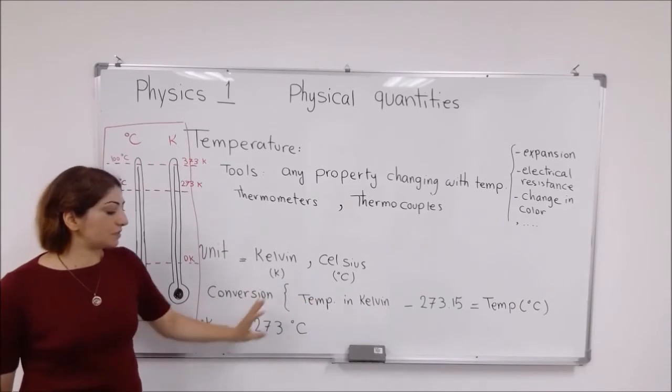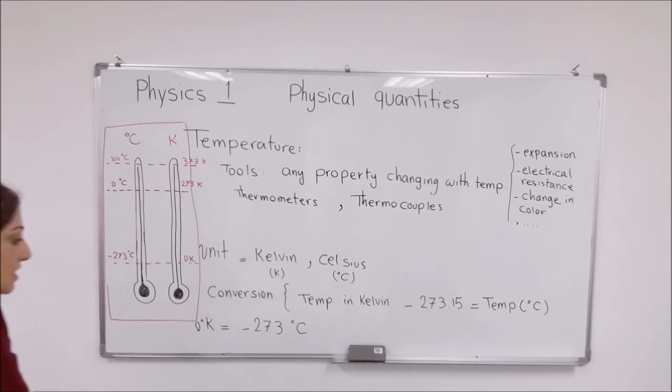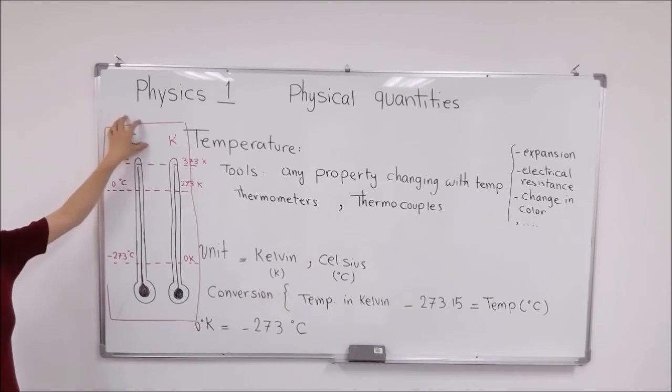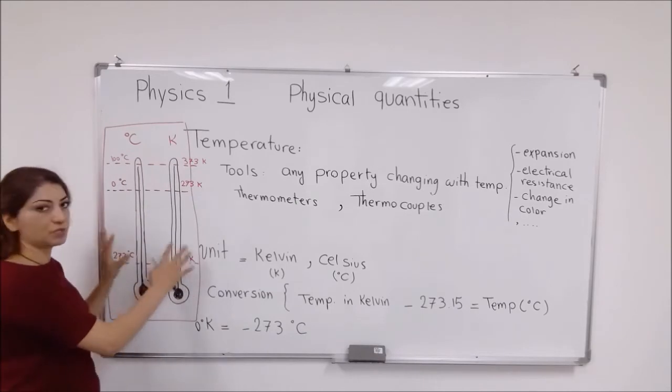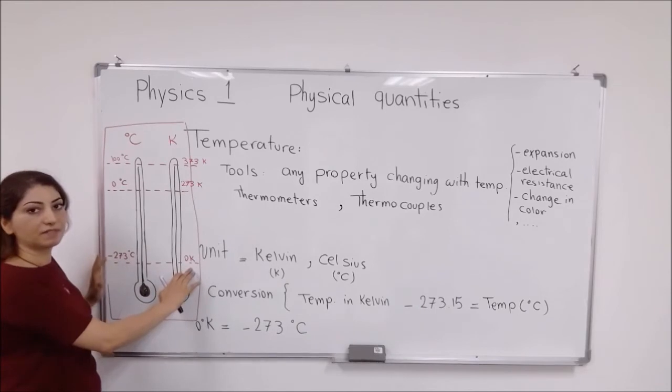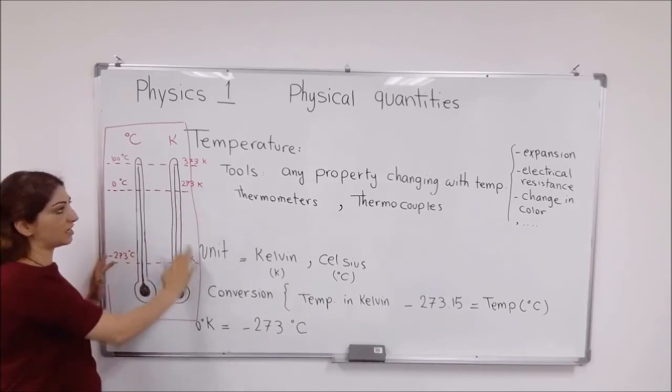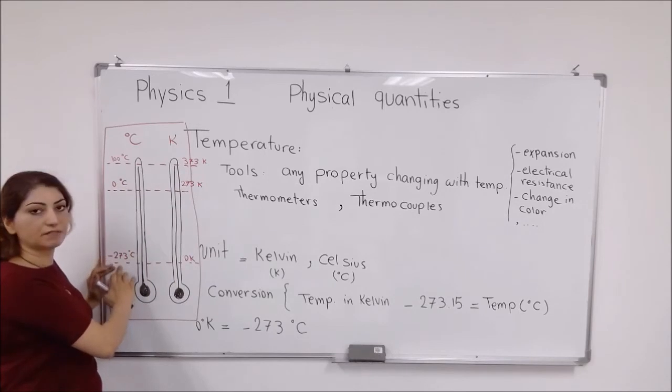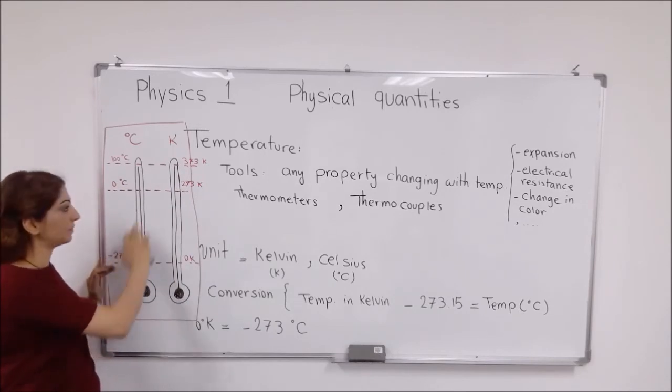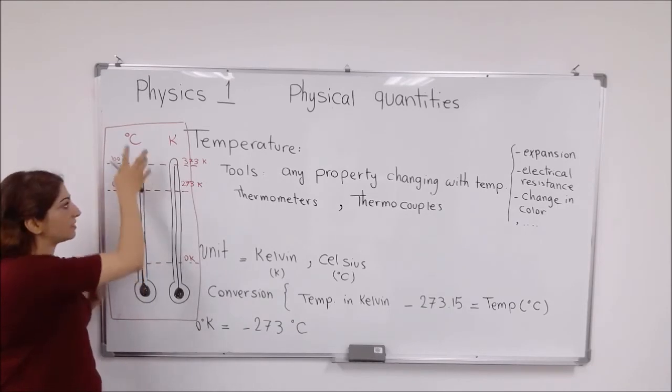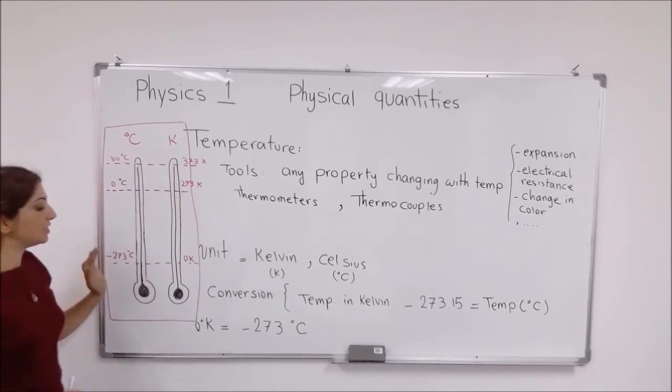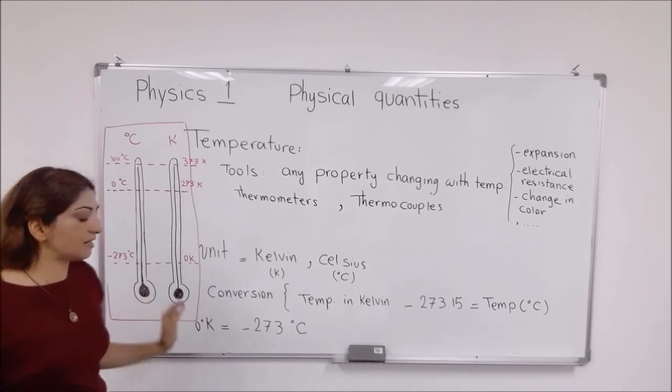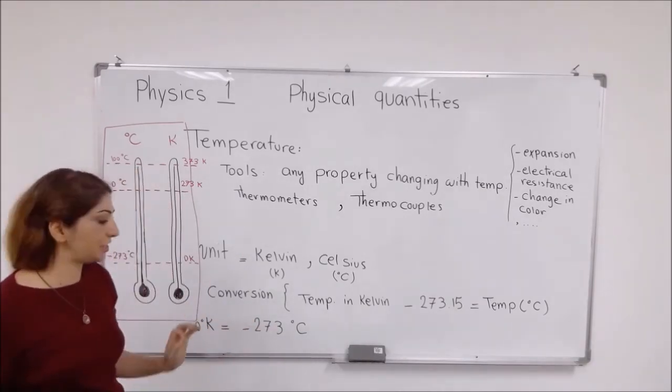The conversion of these units: each zero degree Celsius, as you can see on the diagram. If this is a thermometer which measures temperature in Celsius, and this one measures temperature in Kelvin, if you compare these two together, you see that zero Kelvin, the zero on this thermometer, equals minus 273 Celsius. The zero Celsius on this thermometer also equals 273 Kelvin. So it means zero degree Kelvin equals minus 273 Celsius.